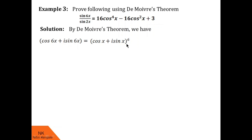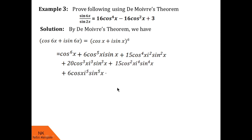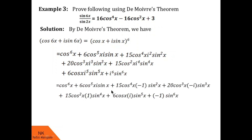By De Moivre's theorem, cos 6x + i sin 6x = (cos x + i sin x)^6. In step 2, we expand the RHS using binomial expansion, treating it as (a + b)^6. You can draw Pascal's triangle to find the coefficients. There will be 7 terms total in this expansion. Then we replace higher powers of i: i² = −1, i³ = −i, i⁴ = 1, i⁵ = i, and i⁶ = −1. After replacement we get the simplified result.